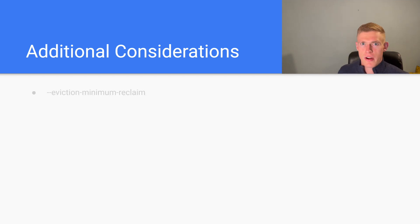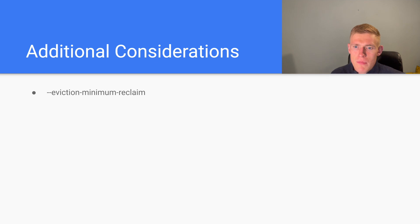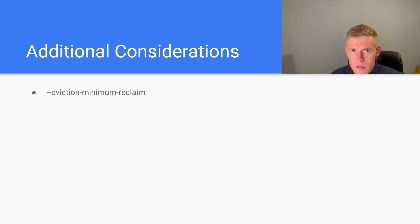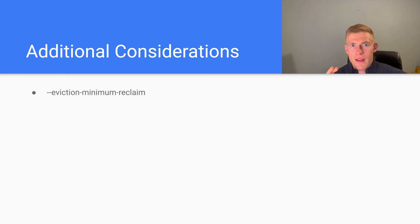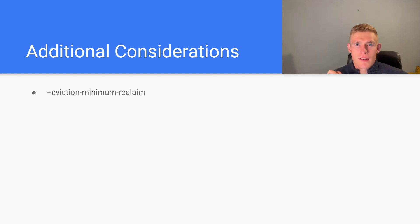There are some additional considerations. The first is the eviction-minimum-reclaim parameter, which you can pass to kubelet. For a particular resource, you can specify that when evicting a pod or set of pods, a certain minimum amount of that resource must be regained — for example, 100 or 200 megabytes of memory, or a certain amount of disk space. This avoids a situation where evictions don't clear enough of the resource and we immediately need to evict again, allowing us to target pods consuming more of the constrained resource.